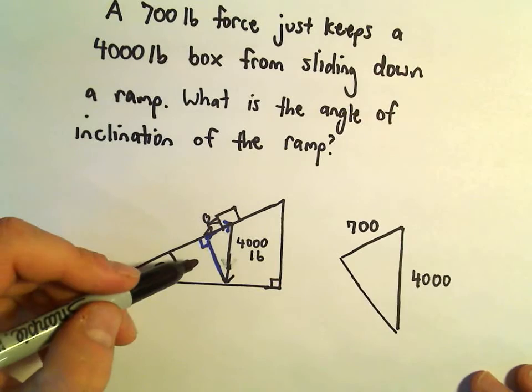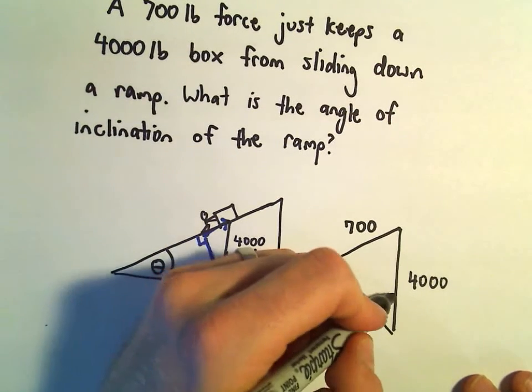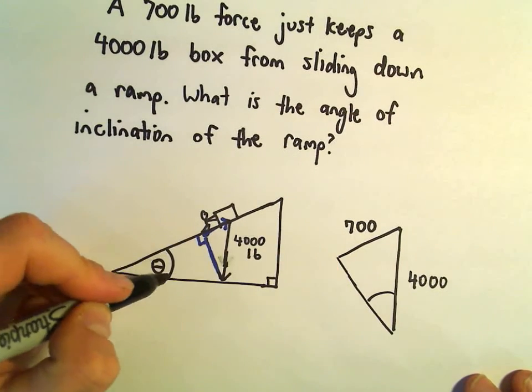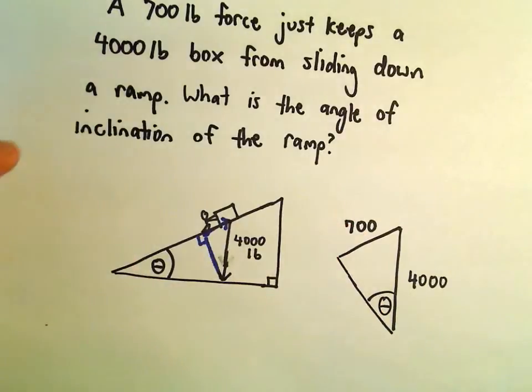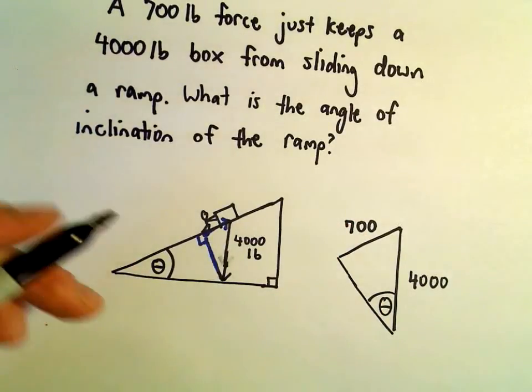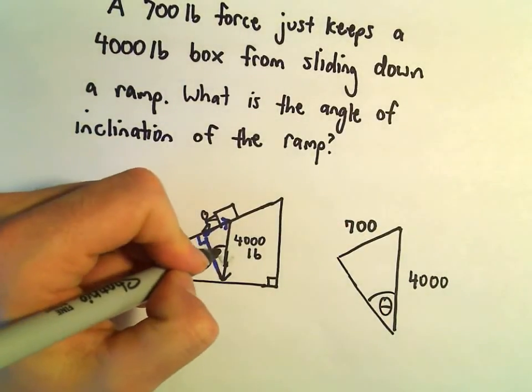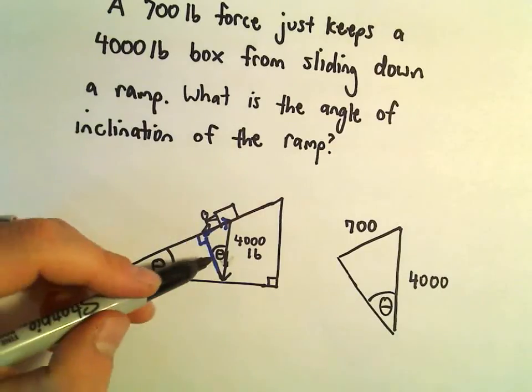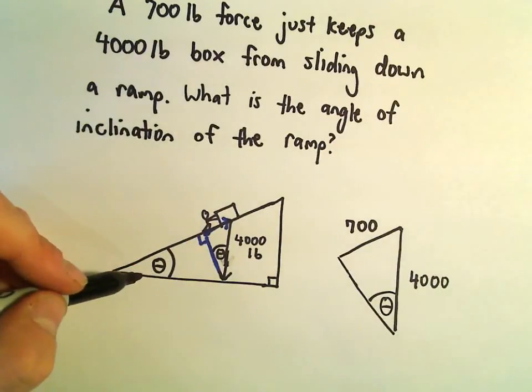And if we make a right angle, just like we have - I'm trying to expand my picture here a little bit - it turns out that whatever the angle of the ramp is, this angle theta, will be the exact same angle. So the angle inside of here, theta, will be the same as the angle of inclination of the ramp.